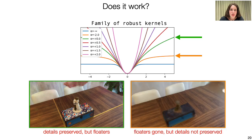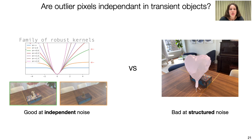With a more conservative kernel, you can get rid of the floaters, but you will also lose details. The underlying assumption behind robust estimators is that outlier pixels are independent processes, but it doesn't hold for transient objects such as this balloon.